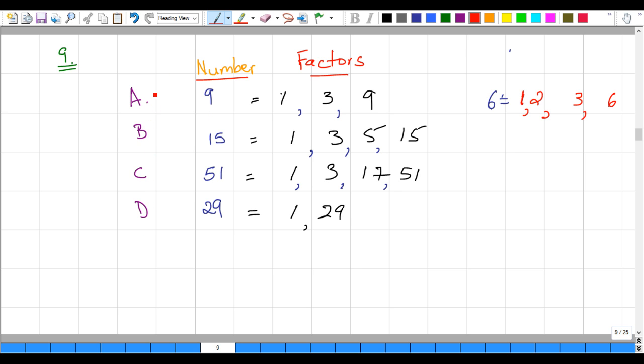Let's look at the options that we have here. We have nine, 15, 51, and 29. The factors of nine are one, three, and nine. The factors of 15 are one, three, five, and 15. The factors of 51 are one, three, 17, and 51.